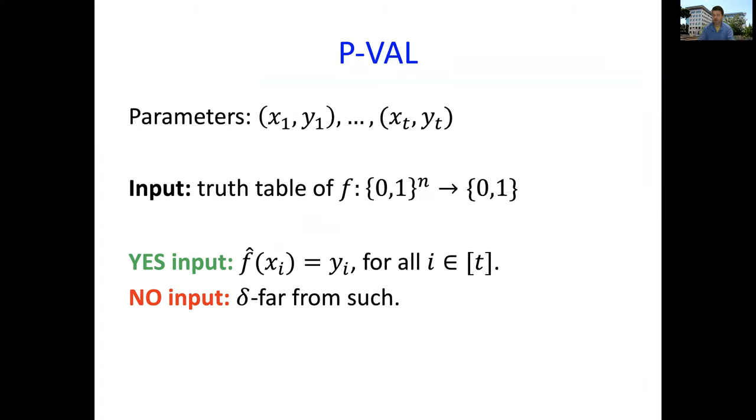Yes inputs are those in which, if I take my function, I extend it, and I look at a bunch of points, I'm going to see a bunch of values. I look at the points x1 up to xt, I need to see the values y1 up to yt. Those are the yes inputs. No inputs are all functions who are far from this set, functions g that are far from any function f satisfying these t equations. That's PVAL.